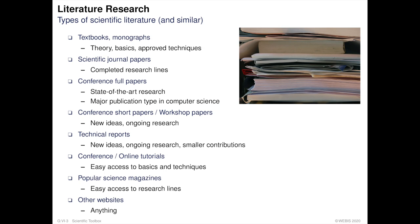There are many different types of scientific literature. Textbooks and monographs are mostly used for well-established theory, basics, and approved techniques. Scientific journal papers present completed research lines. Full conference papers present state-of-the-art research and are one of the most major publication types in computer science.